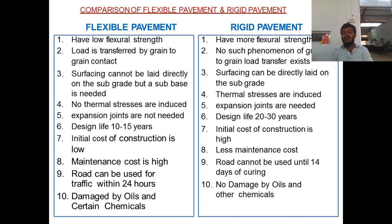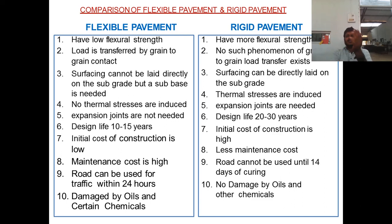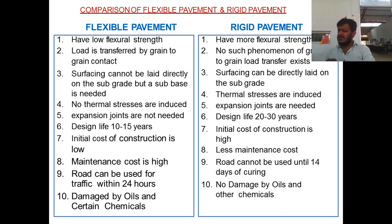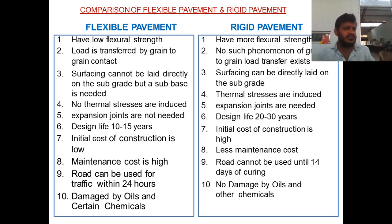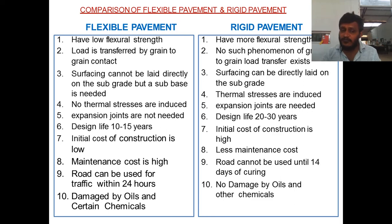The design life of flexible pavement is 10 to 15 years; for rigid pavement it is 30 to 40 years. Initial cost of construction is low for flexible pavement but very high for rigid pavement. Maintenance cost is high for flexible pavement but very low for rigid pavement. However, when considering life cycle cost — including initial cost, maintenance cost, and vehicle operation cost — rigid pavement has a lower life cycle cost compared to flexible pavement.